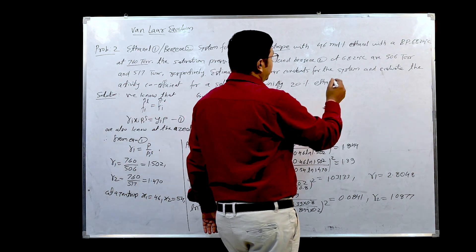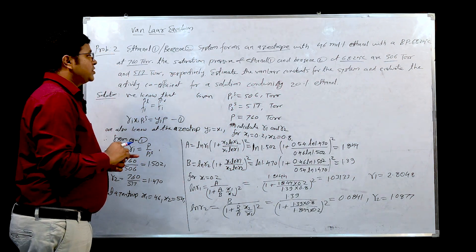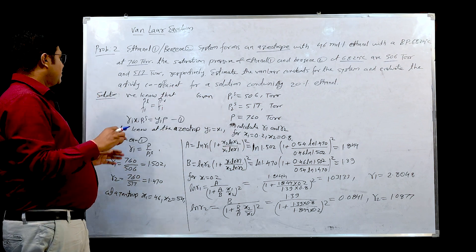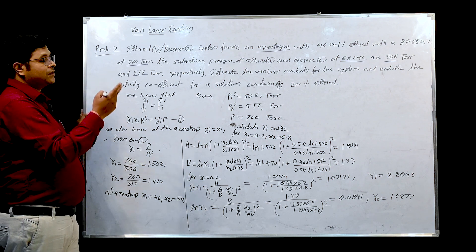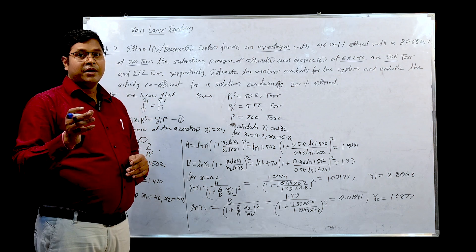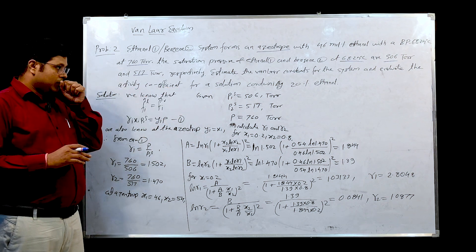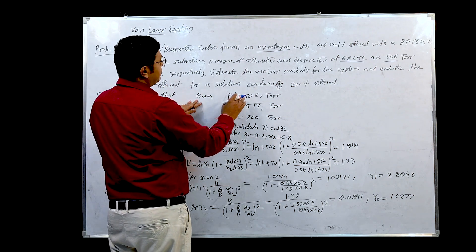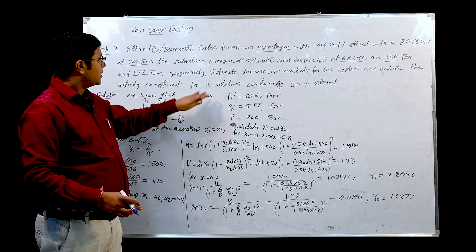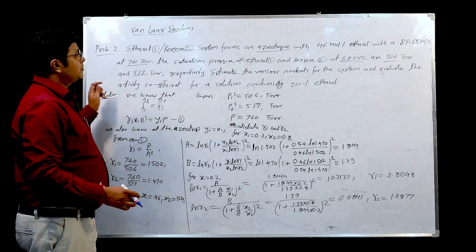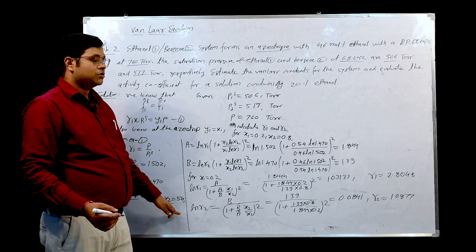The saturation pressures of ethanol and benzene at 68.24°C are 506 Torr and 517 Torr respectively. We have to estimate the Van Laar constants for the system and also evaluate the activity coefficients for a solution at 20 percent ethanol. The given data includes P₁ˢ = 506 Torr, P₂ˢ = 517 Torr, total pressure P = 760 Torr, temperature = 68.24°C, and at the azeotrope x₁ = 0.46 and x₂ = 0.54.